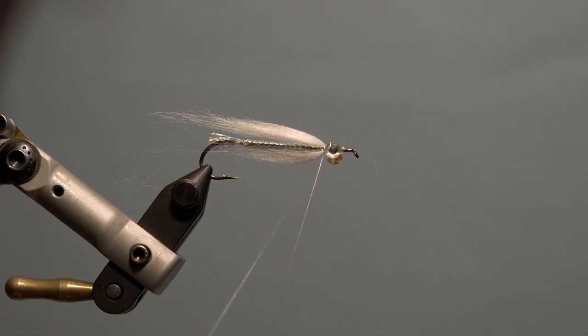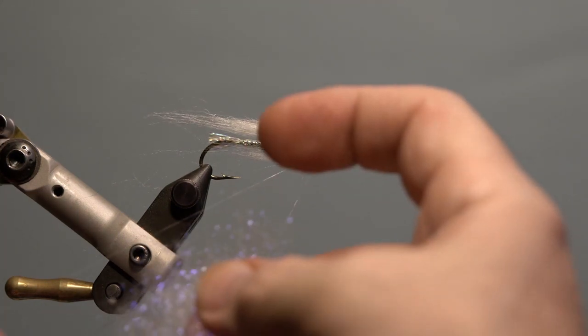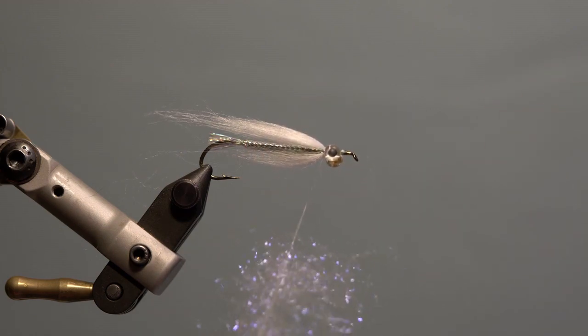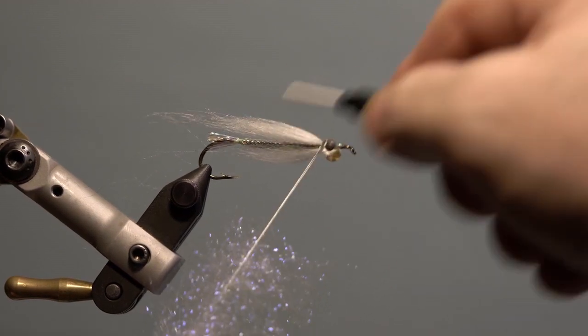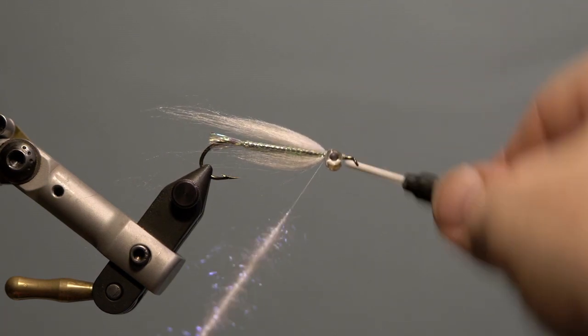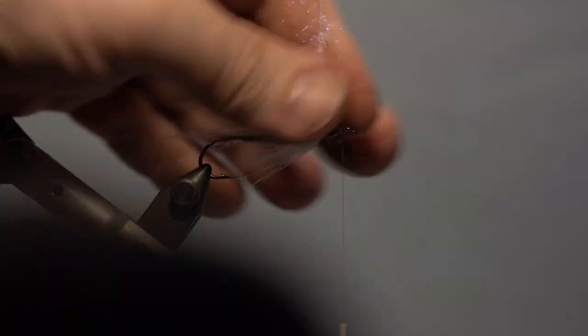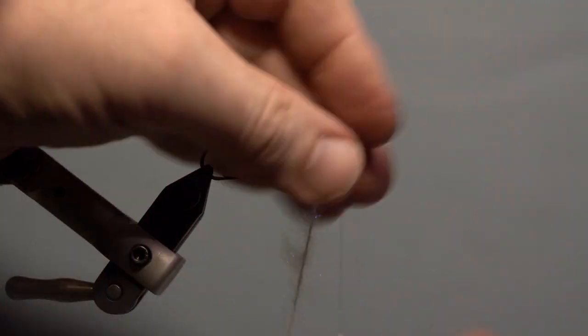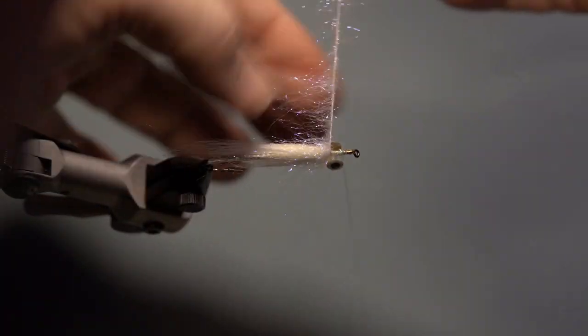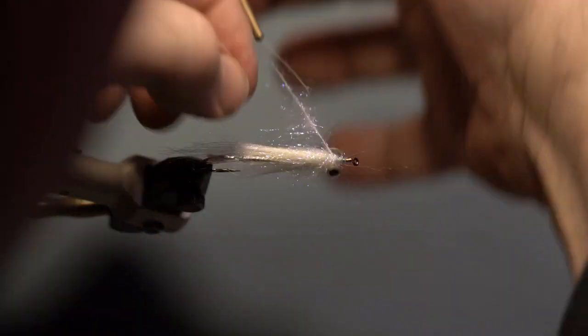Next, split the thread, wax and add bluish white dub loosely. Add the dubbing twister to the thread below the dubbing, double over the thread and spin. Brush out the dubbing, switch over to a hackle plier, and wrap the dubbing behind the eyes and in between. Pull back the fibers with your fingers. Secure with the thread in front of the eyes, trim and brush out the dubbing.